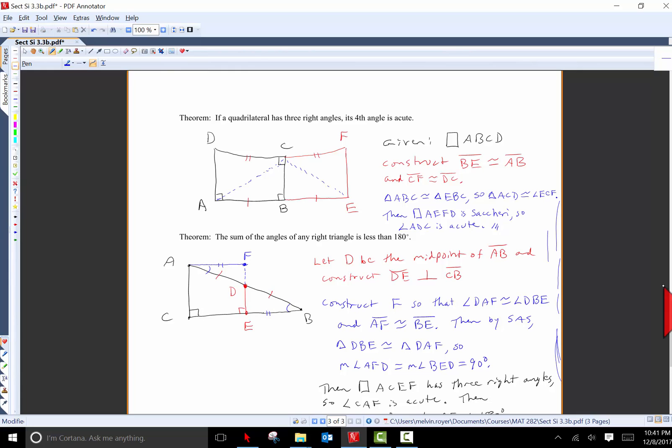Third fact, if a quadrilateral has three right angles, then its fourth angle has to be acute. So we start with the quadrilateral in black ABCD. Then let's form the red construction. Let's extend segment AB and measure off BE so that it's congruent to AB. Likewise, up here at the top, extend line DC and measure off till CF is congruent to DC. Then play some side angle side triangle congruence games. So ABC can be shown to be congruent to EBC and I get a bunch of angles and sides congruent. And then the upper two triangles ACD and ECF can be shown to be congruent.